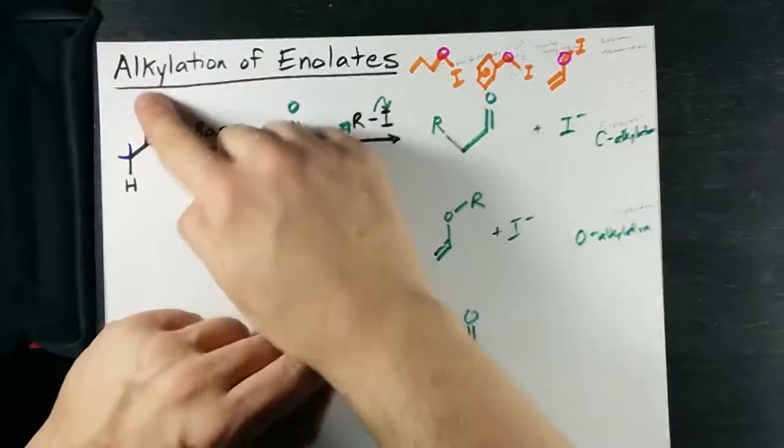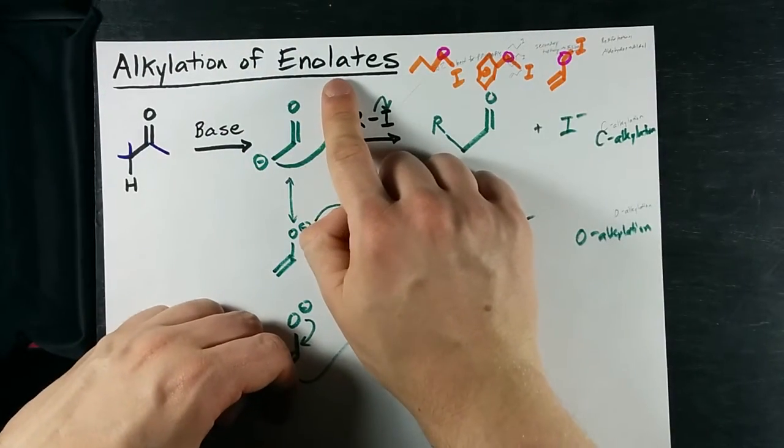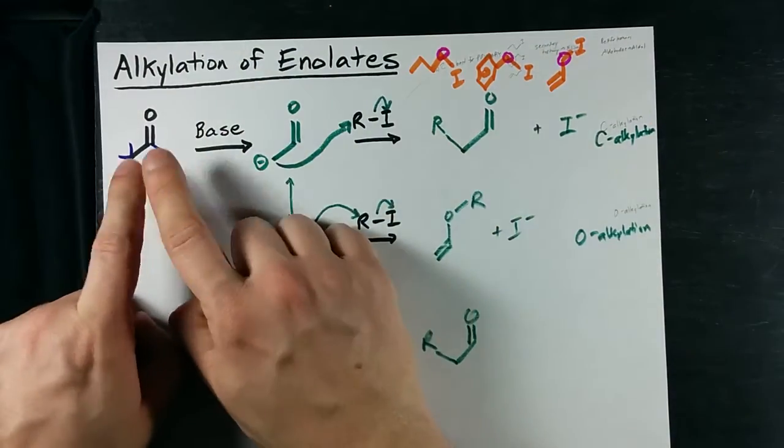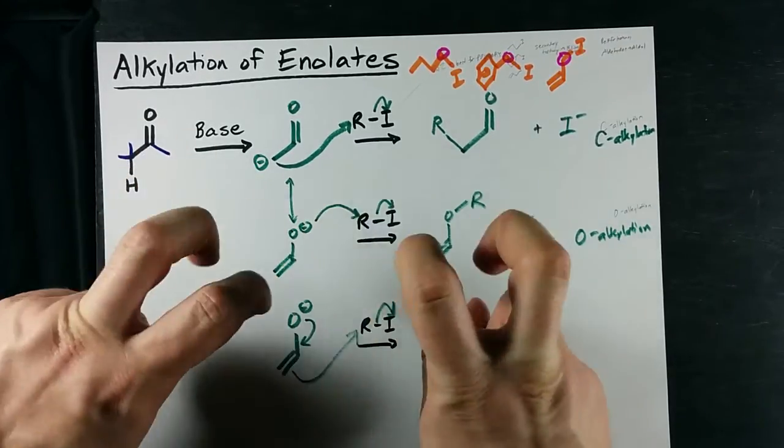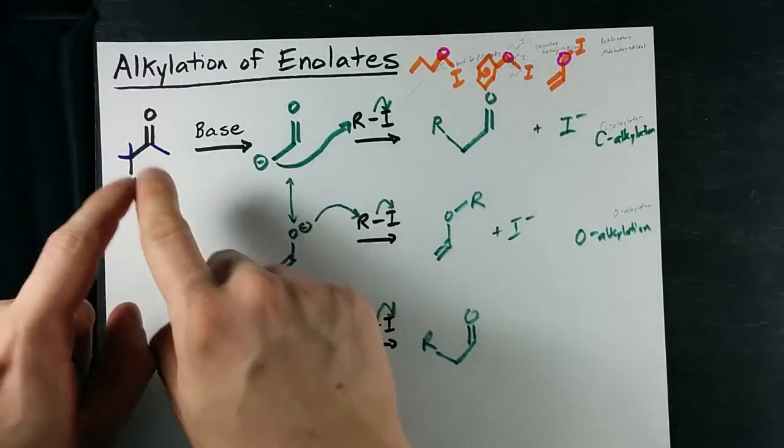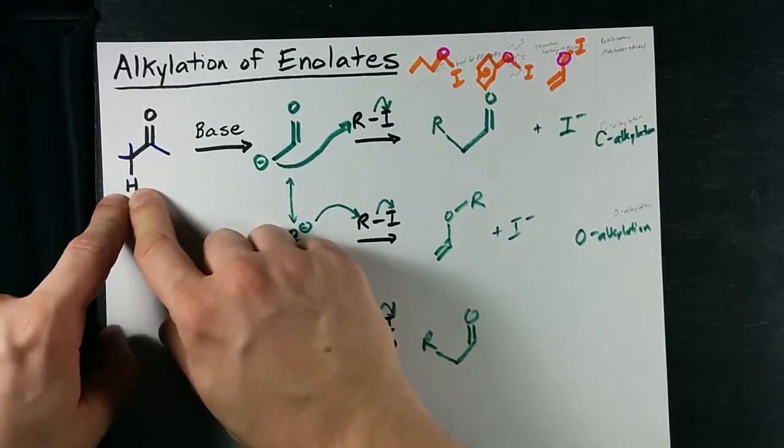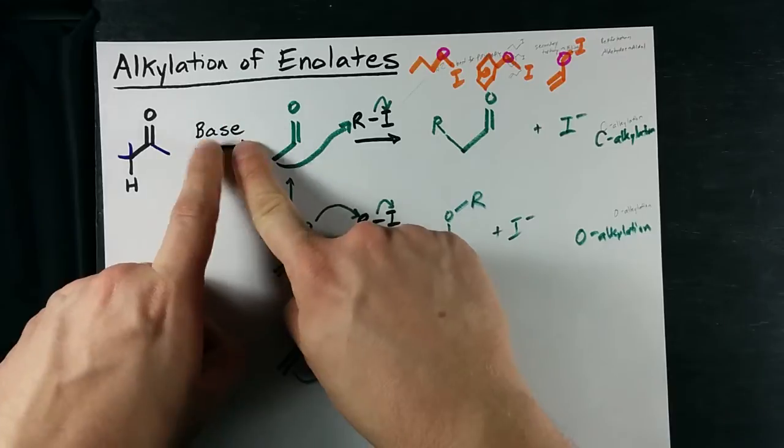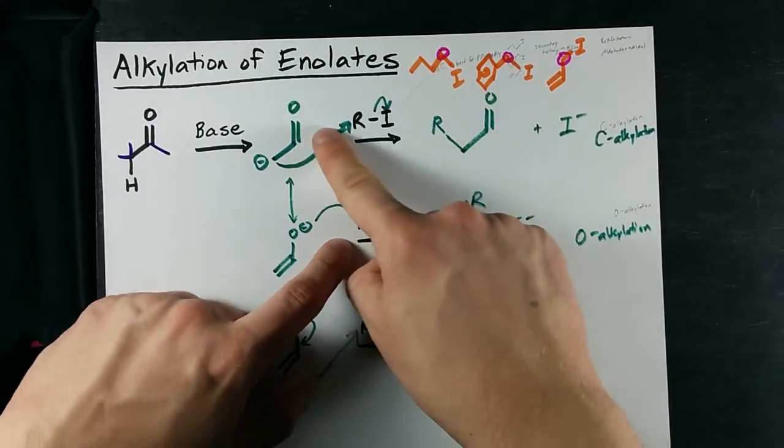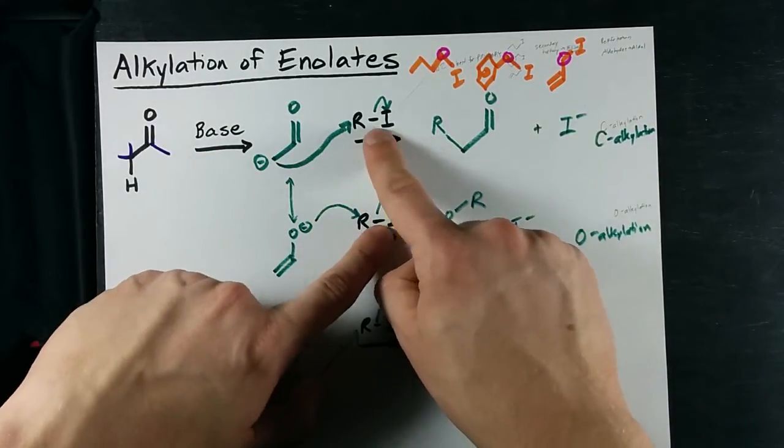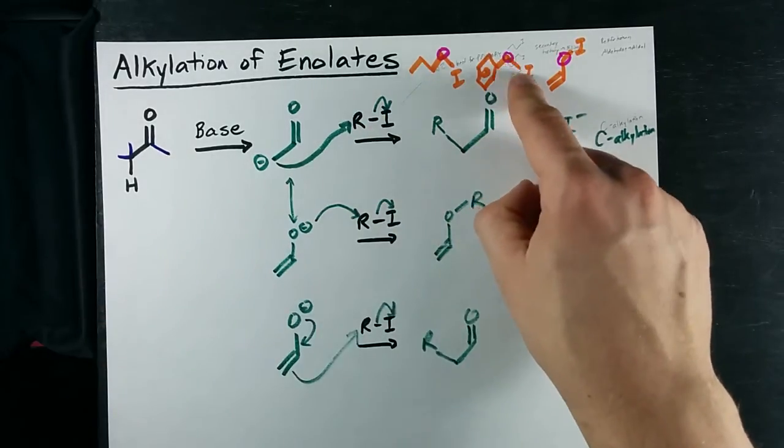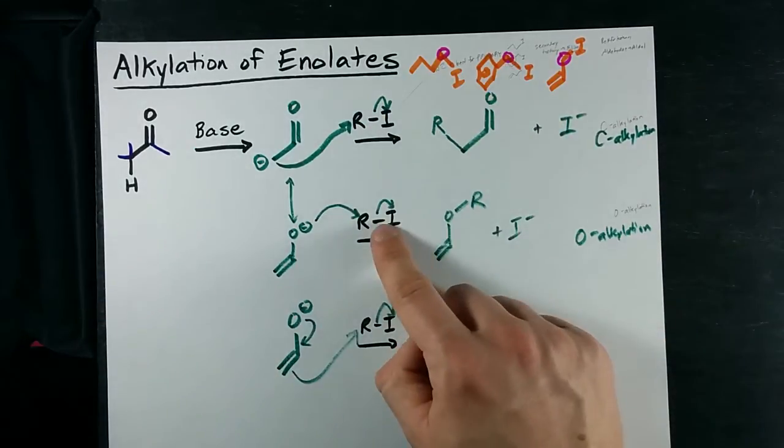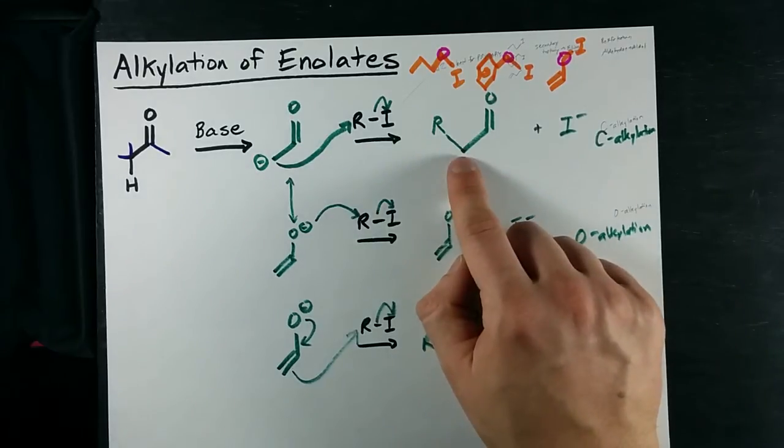So you can alkylate enols, preferably that came from ketones. If you start with an aldehyde, it's going to do an aldol condensation instead, but start with a ketone, rip off the alpha hydrogen with a strong base, then react it with a primary halide or something primary with a halogen on it.